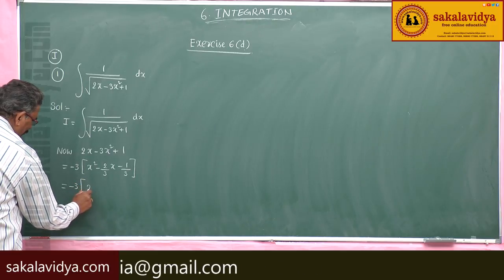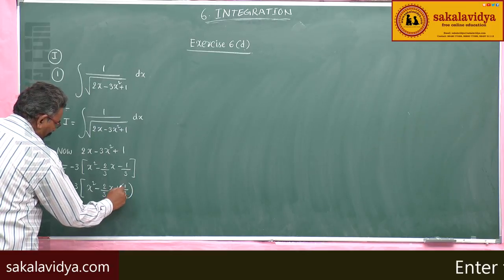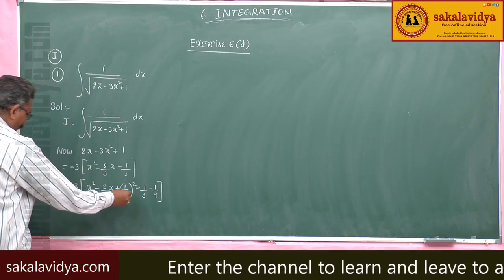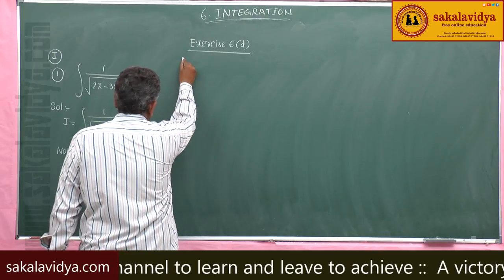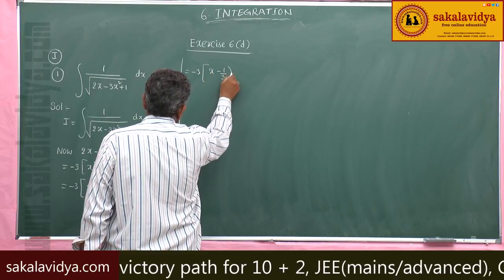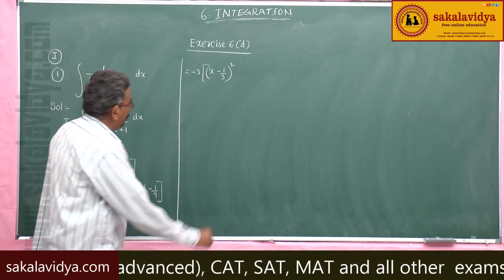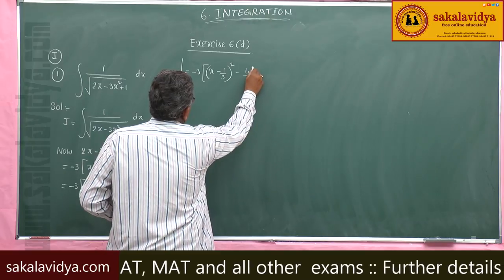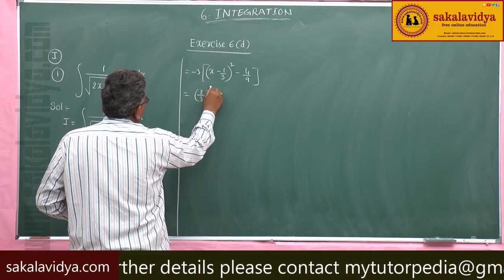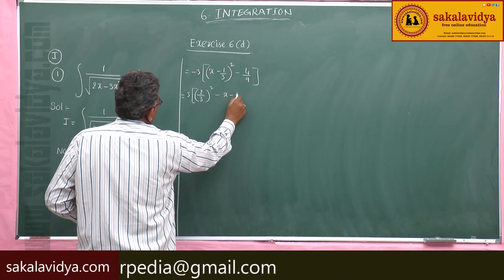So, minus 3 times [x squared minus 2/3 x plus (1/3)² minus 1/3 minus 1/9]. The first three terms we can write as minus 3 times (x minus 1/3) whole squared. With LCM 9, this becomes minus 3 times [(2/3)² minus (x minus 1/3)²].